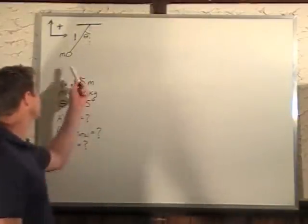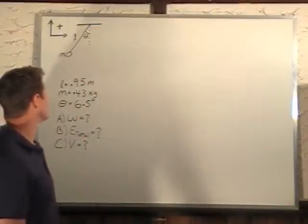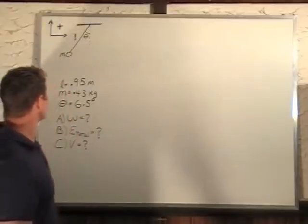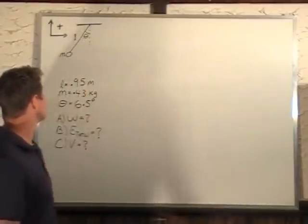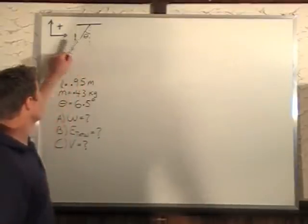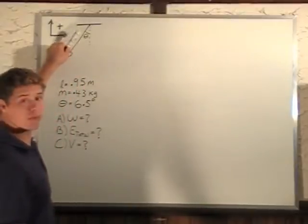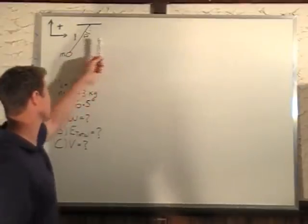In this problem, we have a pendulum that's swinging back and forth with a mass of 0.43 kilograms. The length of the string is 0.95 meters, and we started off by holding it at an angle of theta equal to 6.5 degrees before releasing it.